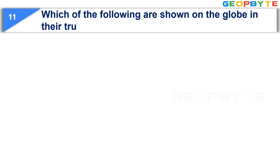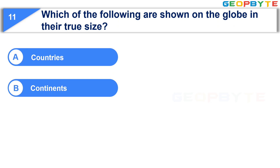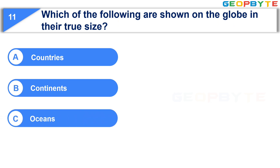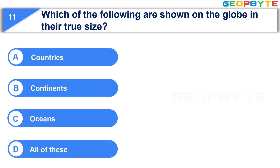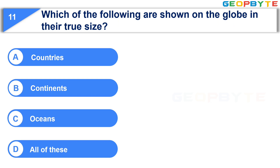The 11th question is: which of the following are shown on the globe in their true size? And the correct answer is Option D: all of these — that is, countries, continents, and oceans.